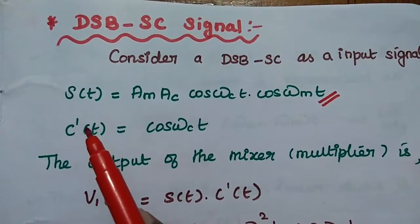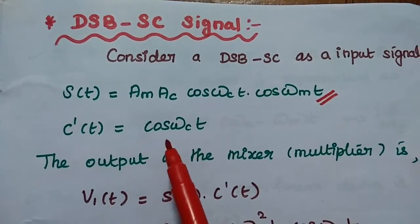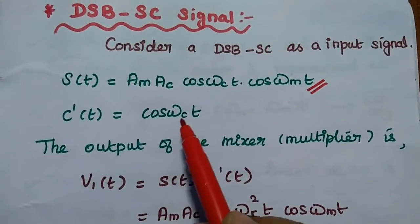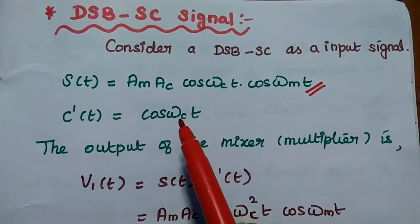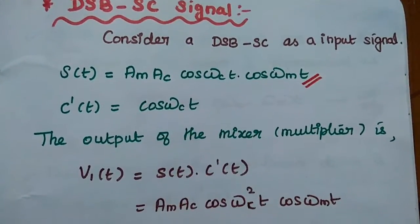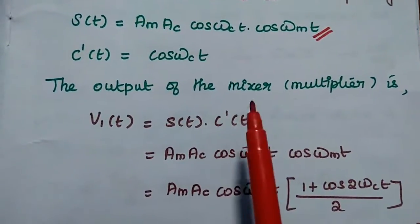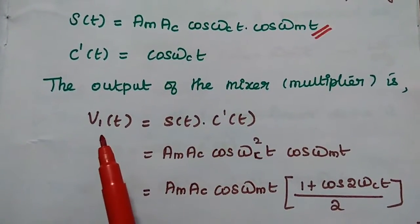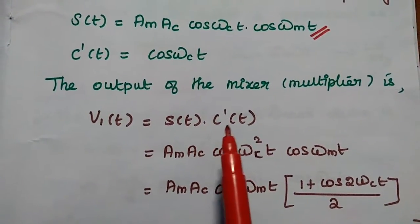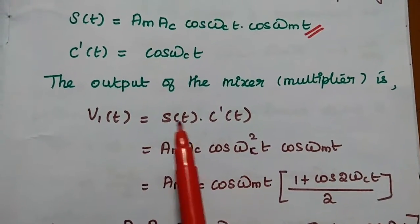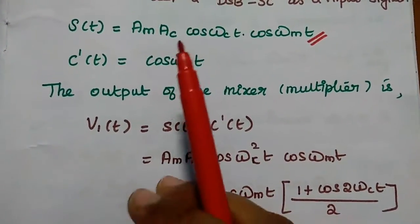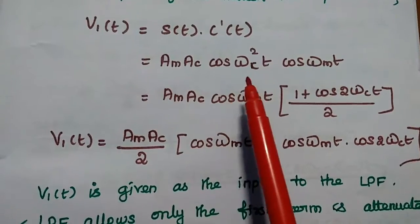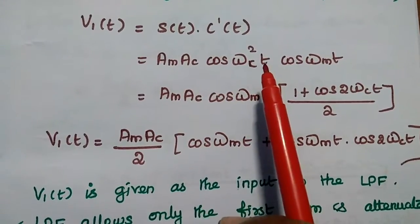C'(t) is equal to cos(ωC·t), where ωC equals the carrier frequency at the transmitter. The output of the mixer or the multiplier is V1(t) = S(t) · C'(t). Substituting these two signals, we get A_M · A_C · cos²(ωC·t) · cos(ωM·t).